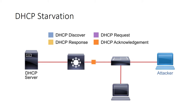In our first example of DHCP starvation, we have an attacker on the network who sends out a DHCP discover message. That DHCP discover message is met with a DHCP response from the server saying you can use this address. If the client device decides to use it, he will send a DHCP request saying yes, please give that to me, and he will get a DHCP acknowledgement saying the address is yours. That is the normal process for DHCP.